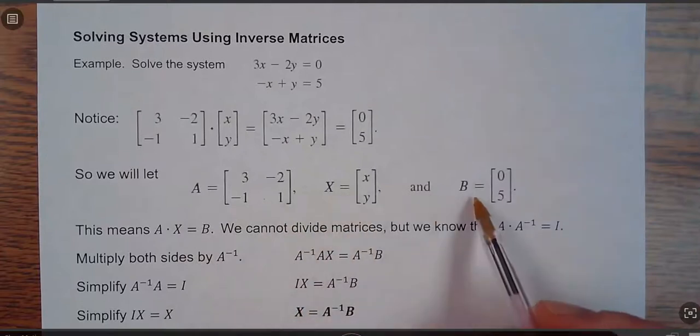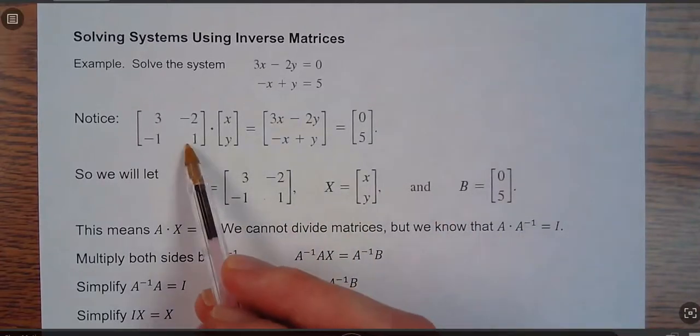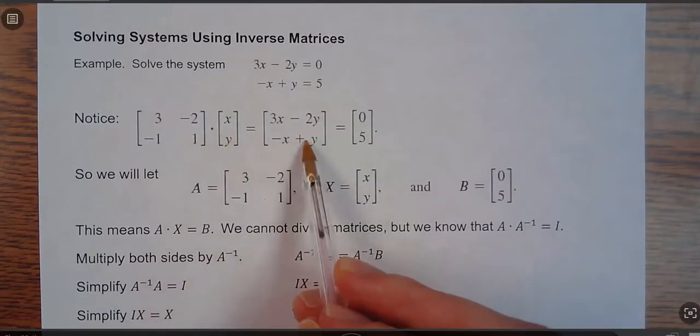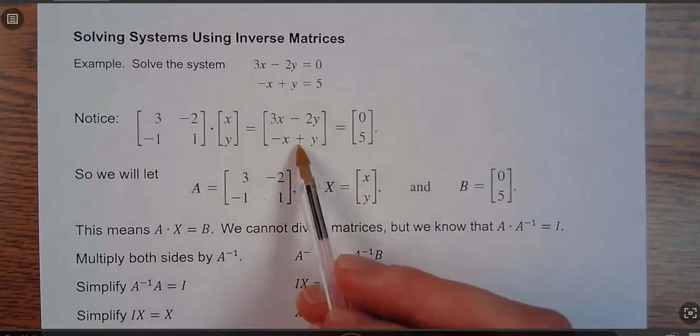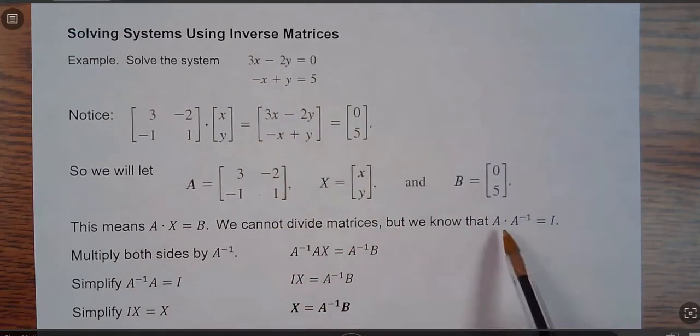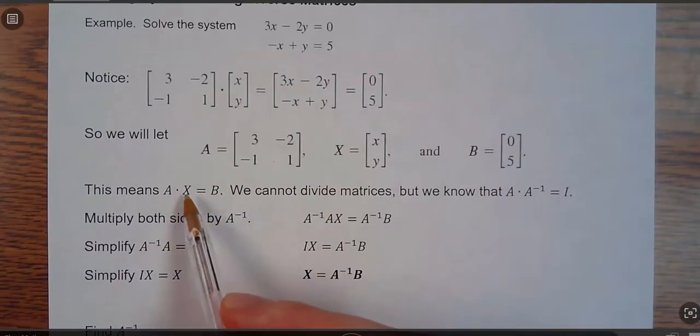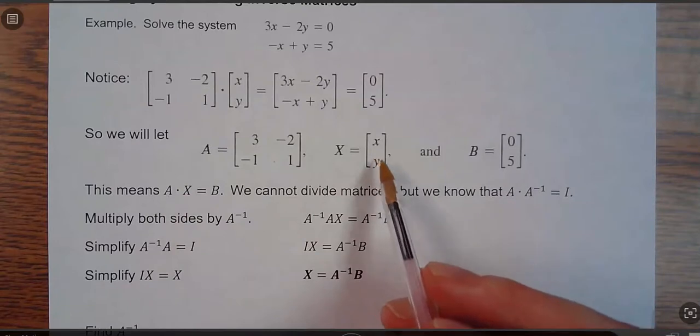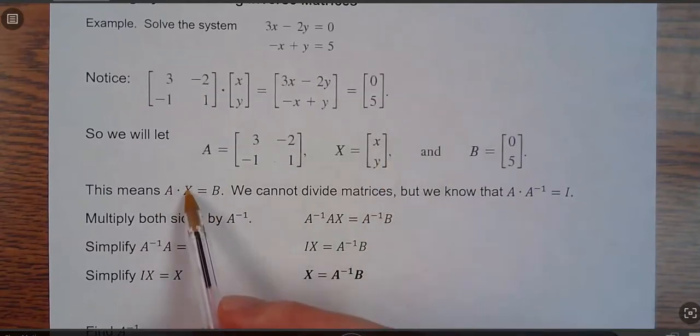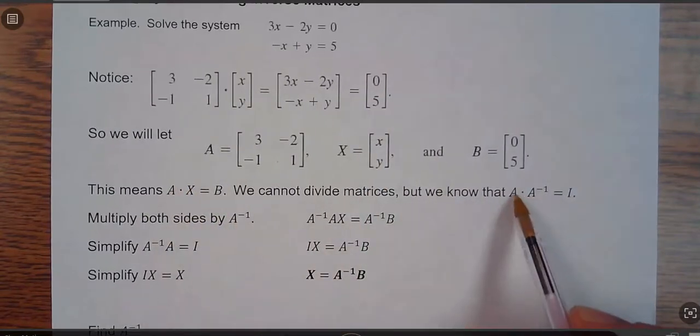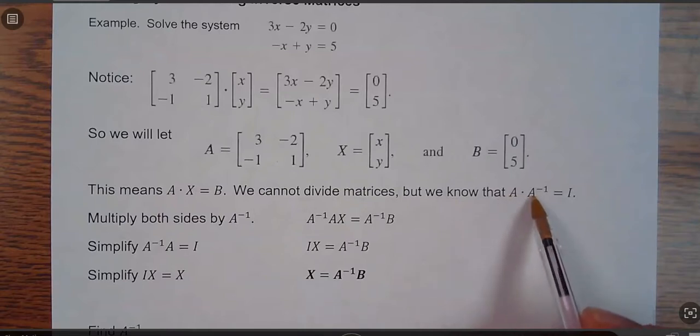So if you have A, X, and B, we can see that A times X equals B. So this is A times X here. So A times X equals B. Now we would love to solve for X. Let's get X by itself, which is the variable matrix. I can't divide A over, but we can multiply by the inverse.